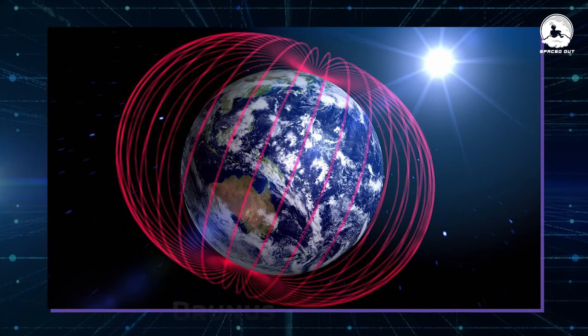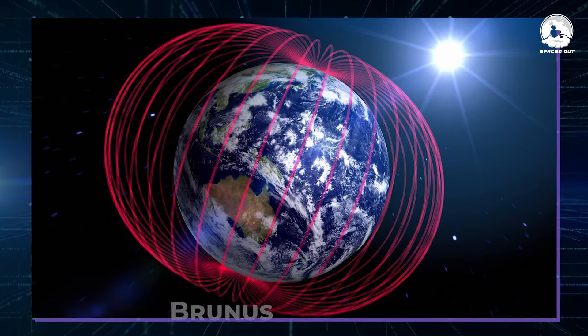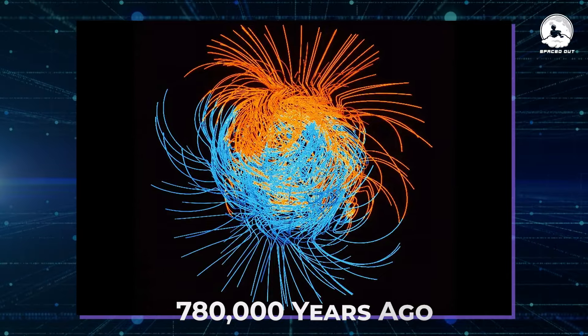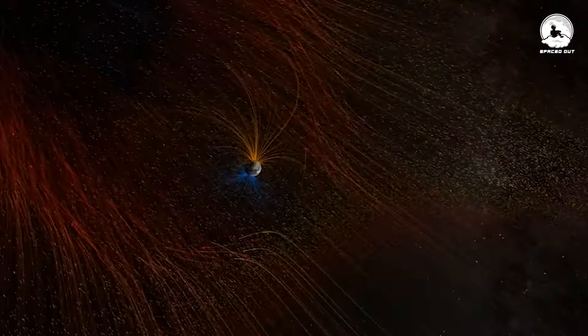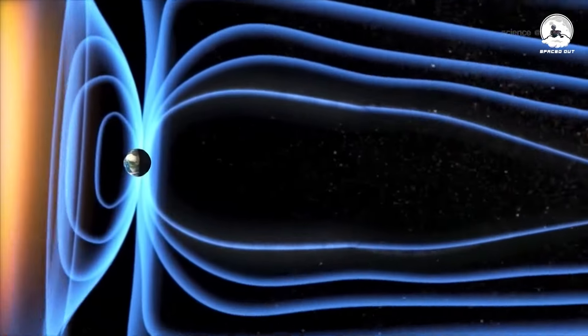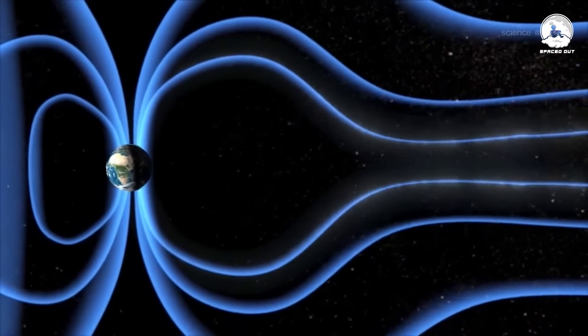The most recent reversal, known as the Brunhes-Matuyama reversal, happened approximately 780,000 years ago. During reversals, the magnetic field weakens, leading to the exchange of positions between the magnetic north and south poles.